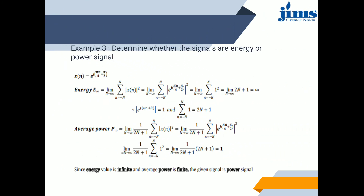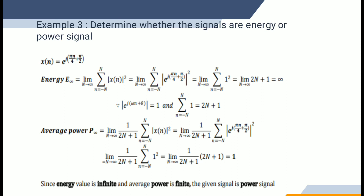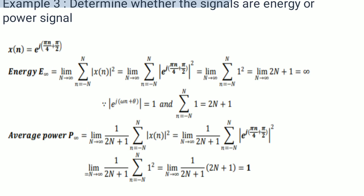Example three: determine whether the signal is an energy or power signal. This is a discrete signal x(n) = e^(j(nπ/4 + π/2)). E∞ is calculated as the limit as N→∞ of the summation from -N to N of |x(n)|². Substituting the value of x(n), since |e^(jω)| = 1 for any ω, each term equals 1. The summation from -N to N of 1 equals (2N+1), so E∞ = limit as N→∞ of (2N+1) = ∞.